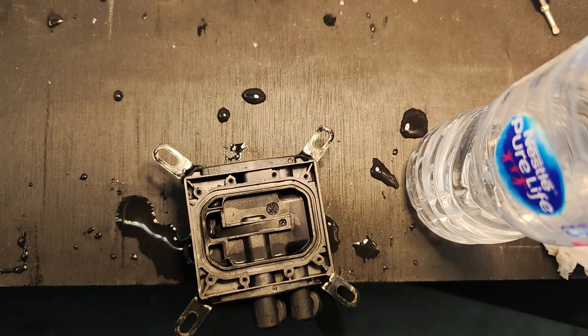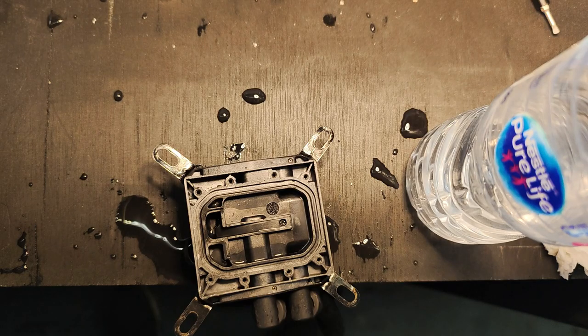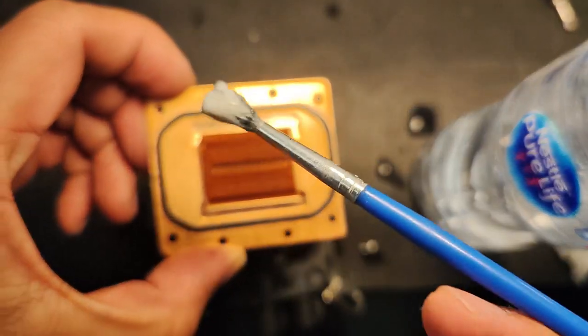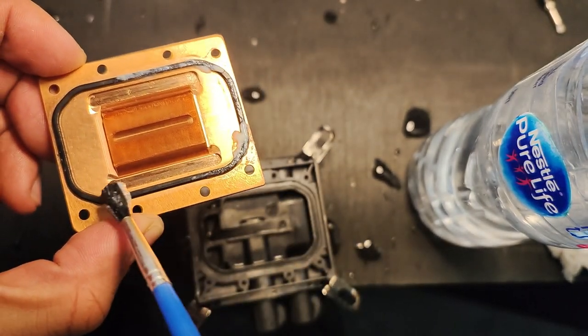Now once that's done, what I highly recommend that you do, because my air cooler is about 10 years old, I would use a little bit of mineral oil on the old seal just to revitalize that nitrile seal again.